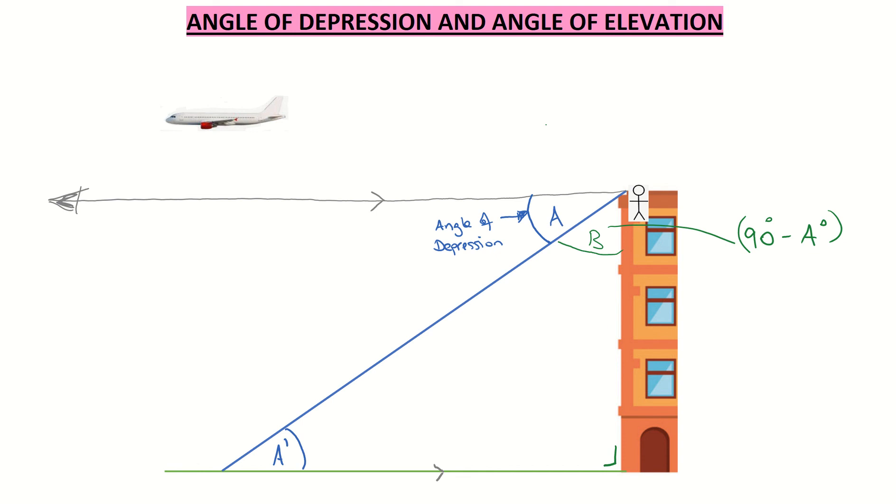So that's what's known as my angle of depression. Let's now look at what's known as the angle of elevation. As you can see from the sketch, the angle of depression is going down. So it's going from the top of the building down to the ground.